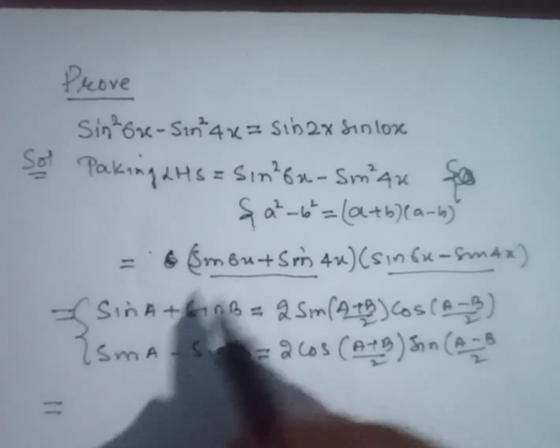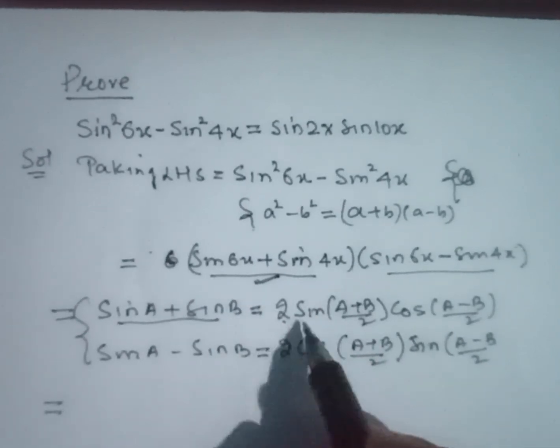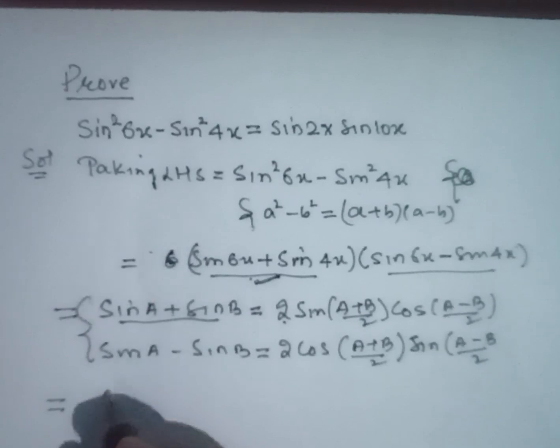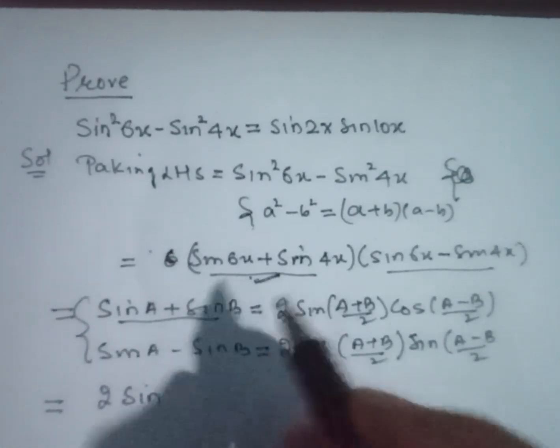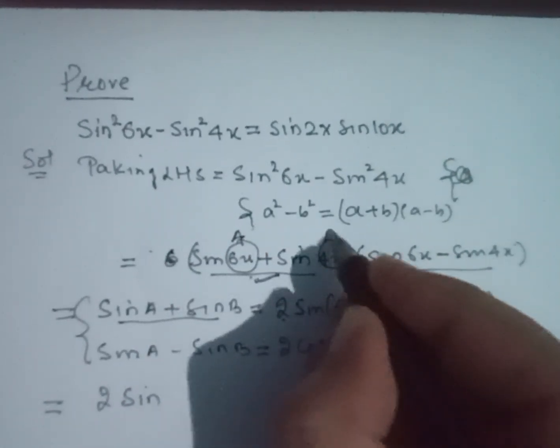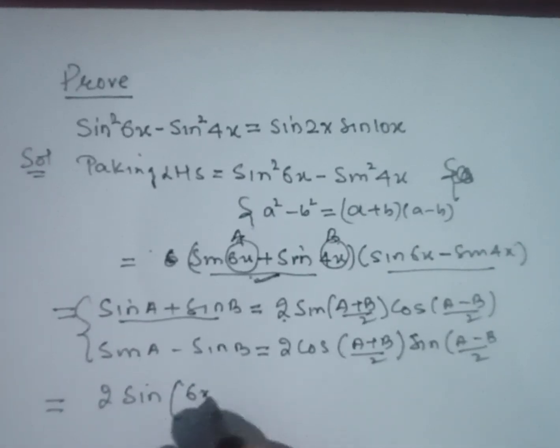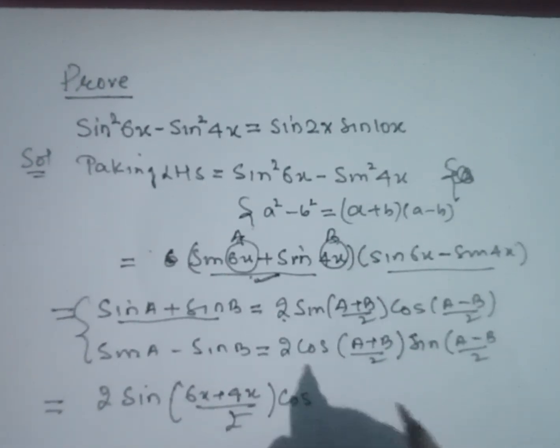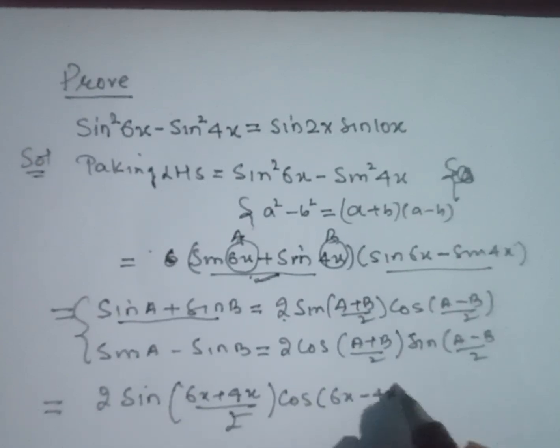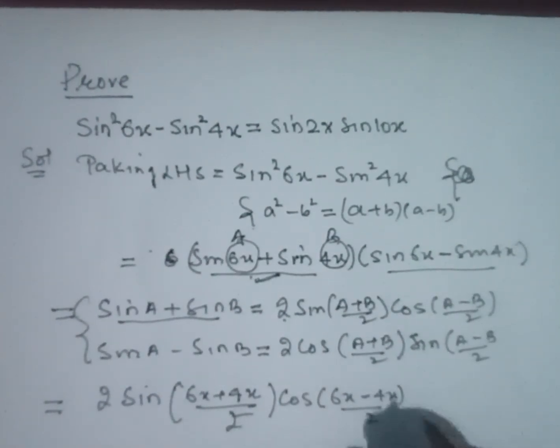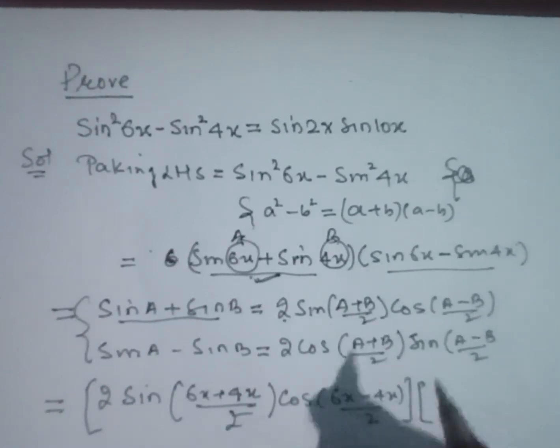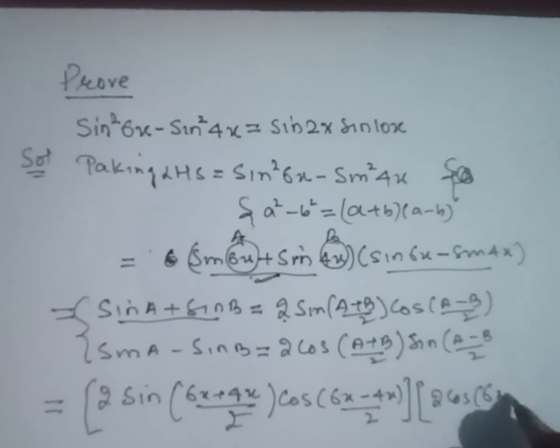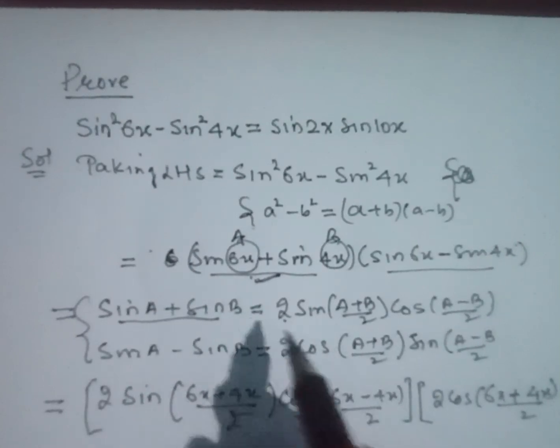Now we will use this identity in the further step. For sin A + sin B, here 6x is A and 4x is B. So 2 sin((6x+4x)/2) cos((6x-4x)/2), and next is 2 cos((6x+4x)/2) sin((6x-4x)/2), according to these identities.